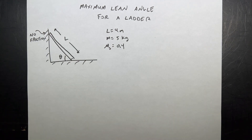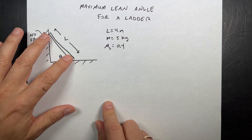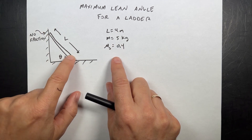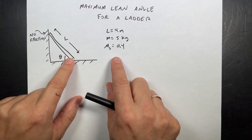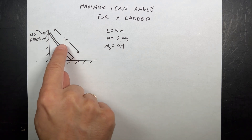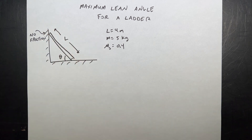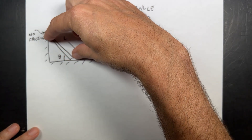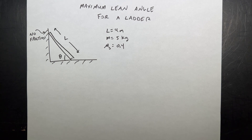I have some values here — we may not need them all, but this is my problem. A ladder of length 4 meters, a mass of 5 kilograms, and the coefficient of static friction at the ground is 0.4. I'm going to say there's no friction at the wall, which isn't perfectly true, but we start with a simple problem. We could later add a person climbing the ladder, or even model a slipping ladder, but I won't do that here.